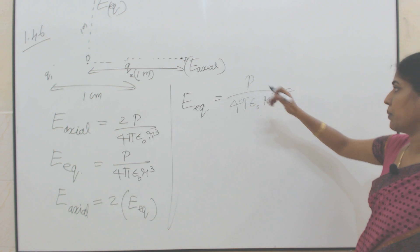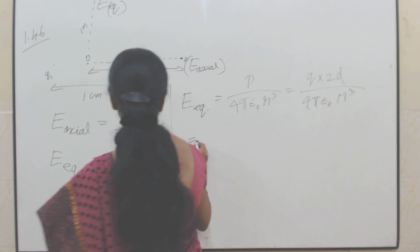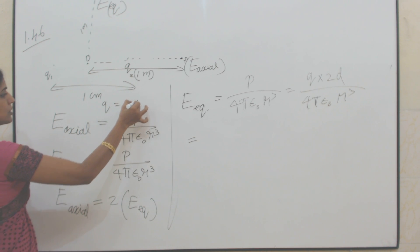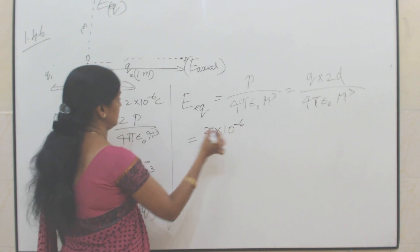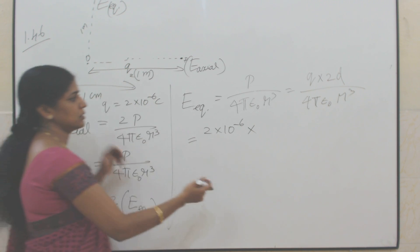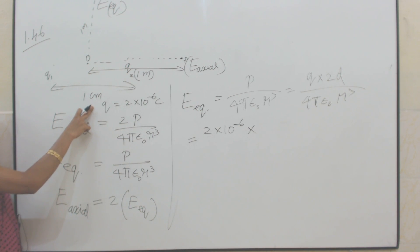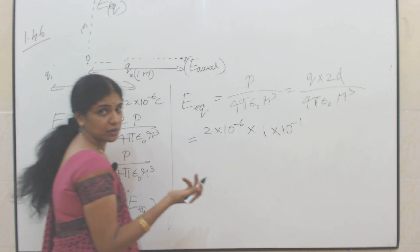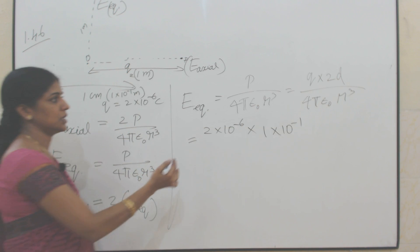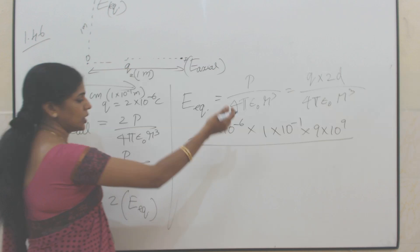Substituting, the dipole moment P = Q × 2d, so E_equatorial = (2 × 2d) / (4πε₀R³). Here Q = 2×10⁻⁶ C, and the separation 2d = 1 cm. Converting 1 centimeter to meters: 1 cm = 1×10⁻² m. The value of 1/(4πε₀) is 9×10⁹, and R = 1 meter, so R³ = 1.